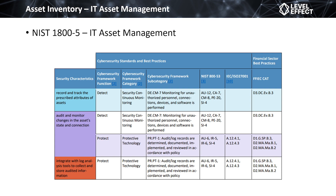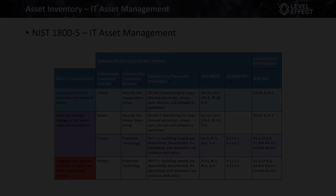NIST provides the 1800-5 specification for how to conduct asset management for your organization. Just like NIST 853 is used for the cyber risk framework, this provides another checklist that allows you to identify what specific tasks you should be doing for a solid asset management program.